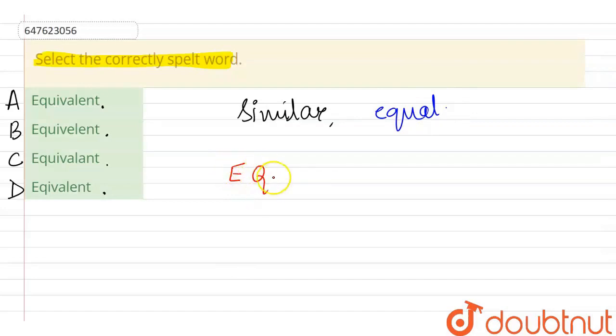It is E-Q-U-I-V-A-L-E-N-T. This is the correct spelling of the word Equivalent. Now, this spelling has been mentioned in option A.